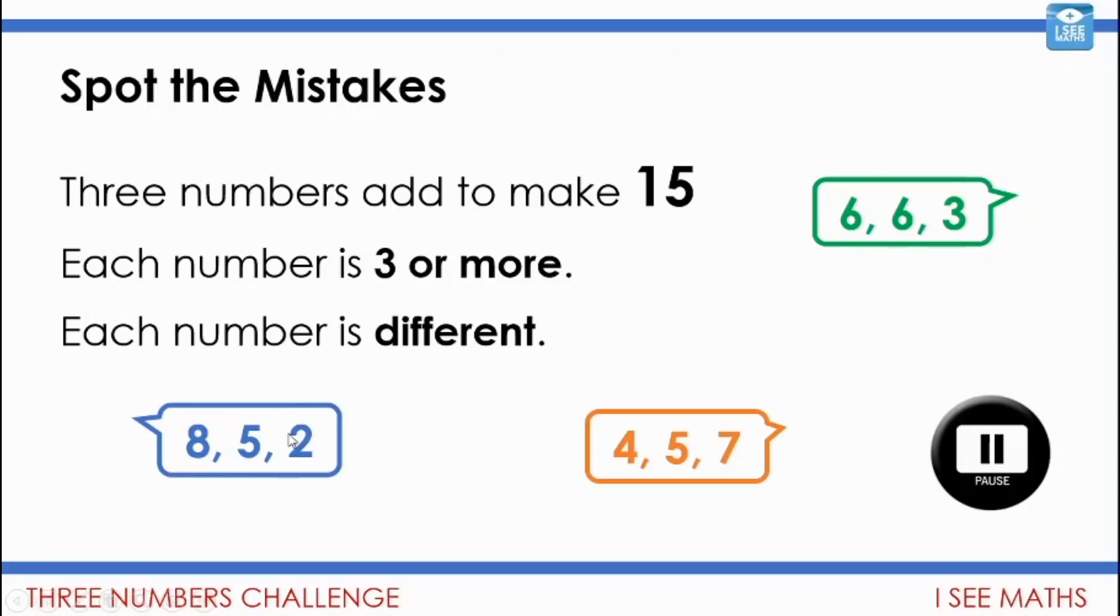So this is an incorrect example. Four and five and seven. Well here I did seven and four is 11. Add that five and that's 16. It's not 15. Six and six and three. Well double six is 12. Add three. That's 15. All the numbers are three or more, but there's two sixes. So each number isn't different. They're things that you'll need to consider.